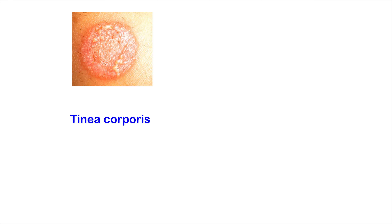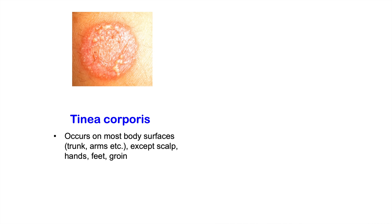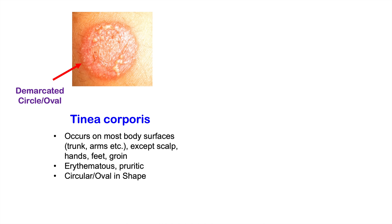Tinea corporis presents as a circular or oval-shaped skin lesion occurring on most body surfaces like the trunk, arms, neck, and legs — except for the scalp, hands, feet, and groin. It is erythematous and pruritic, meaning it is itchy, and it is clearly demarcated, with a very distinct border from the lesion to normal skin. It is a scaling lesion that can be either a flat patch or a slightly raised plaque.